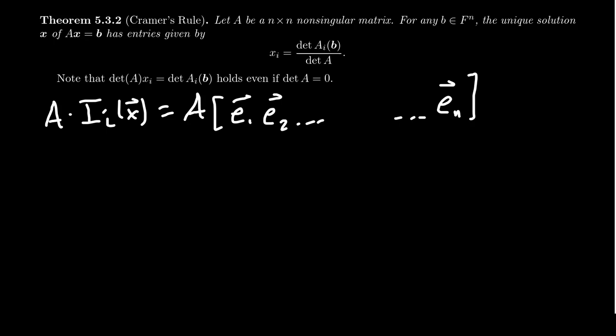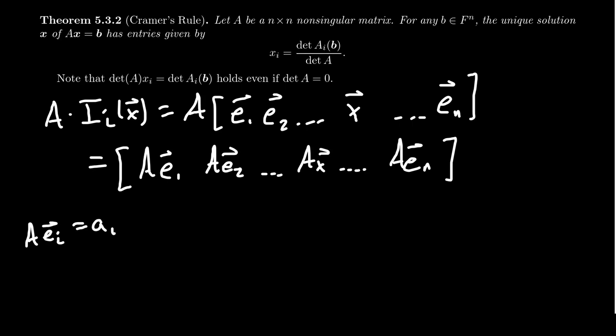Remember, e_1 was the vector with a one in the first spot, zeros everywhere else. e_2 was the vector with a one in the second spot, zeros everywhere else. We're just going to get the identity matrix e_n, one in the last position, zeros everywhere else. But because of the I_i(x) notation, we're going to put an x in the i-th column. In terms of matrix multiplication, if you times a matrix by a matrix, that's equivalent to multiplying each individual column of the second matrix by the entirety of the first matrix.